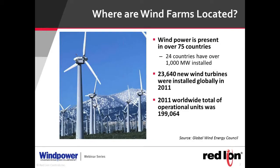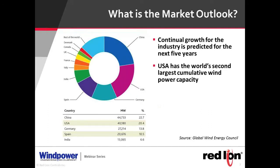It's amazing how wind power has taken off. It's now present in over 75 countries, and 24 of those countries have over 1,000 megawatts of installed capacity. In 2011 alone, over 23,000 new wind turbines were deployed globally, bringing the worldwide total to over 199,000 wind turbines. There's been concern about the production tax credit in the United States, but fortunately it was renewed for 2013, and the outlook is still very good.